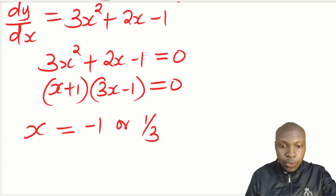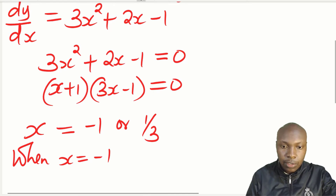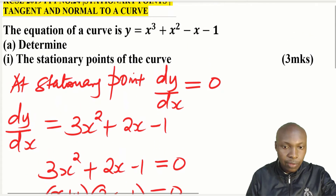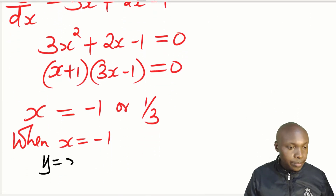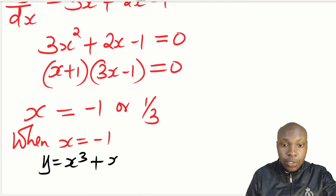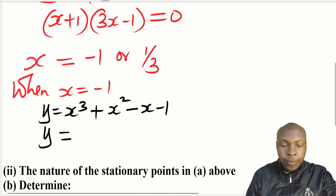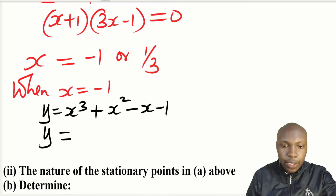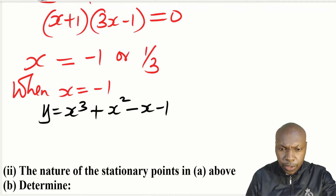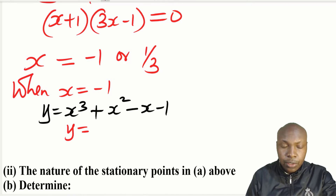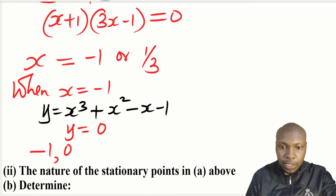To get the coordinates of the stationary points, we need the corresponding y values. When x = -1, we substitute into the curve equation y = x³ + x² - x - 1. Substituting x = -1 gives y = 0. Therefore, the first stationary point is (-1, 0).